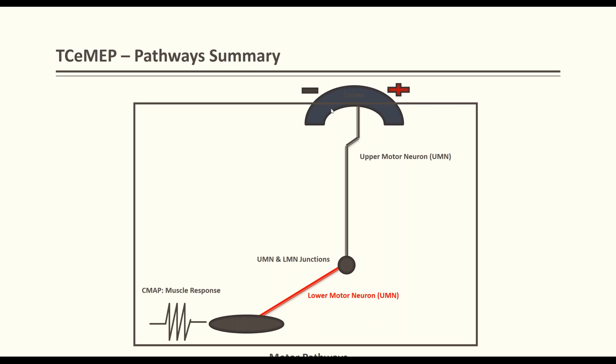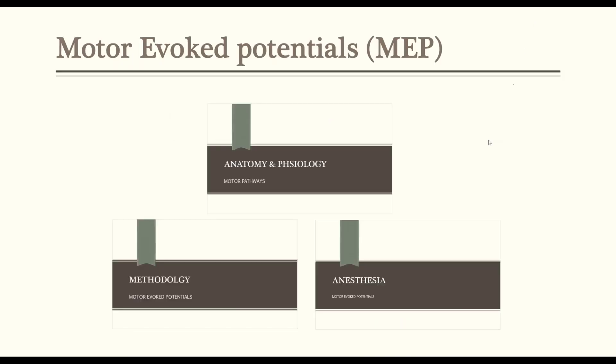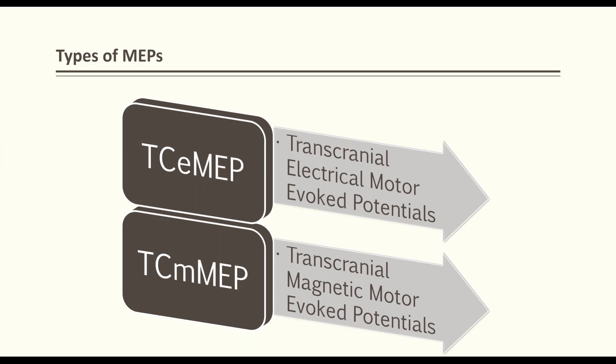When setting up, the muscles recorded must be on the side opposite to the anodal electrode, not the cathodal side. For the Cadwell machine, black should always be on the left and red on the right. C2 and C4 should always be on the red output — stimulating in normal mode gives a response from the left side, and reversing polarity gives a response from the right side. There are two types of MEP: transcranial magnetic (TMS) and transcranial electrical.